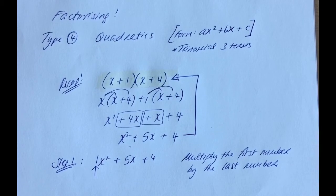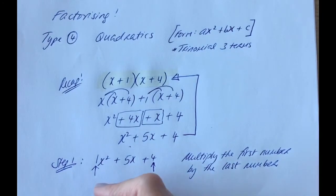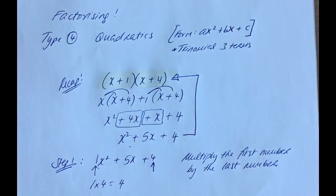So that's the first number I'm talking about here. If it's just x squared you have, the number is 1. And the last number is 4. So the first step is 1 times 4, which is, of course, 4.